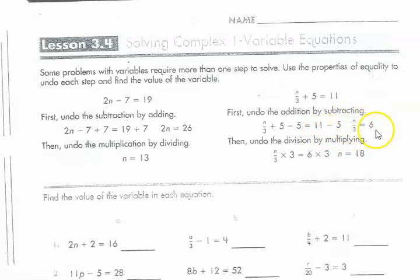So now, do you have your n all by itself, your variable? No, you don't. You still have to do some more work in order to get the n by itself. So now, you are going to undo the division by multiplying. So you have n divided by 3. The opposite of dividing is multiplying. So you're going to multiply by 3 to get rid of these 3s. So you have to do the same thing on both sides. So n divided by 3 times 3 equals 6 times 3. The 3s cancel. You end up with n equals 18. There you go.